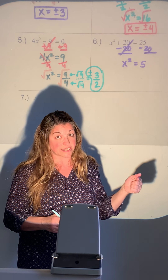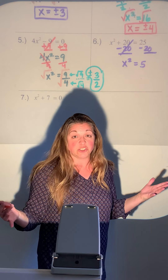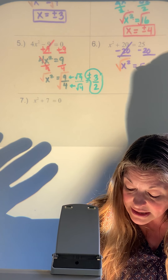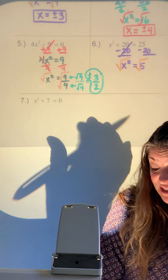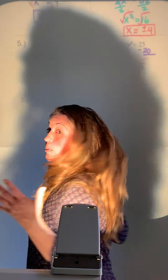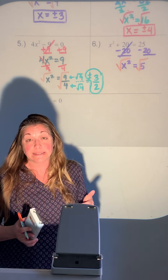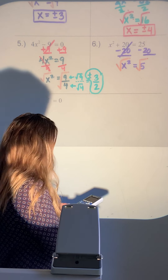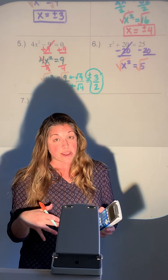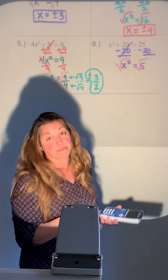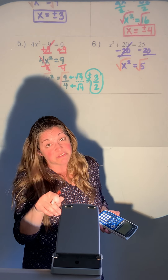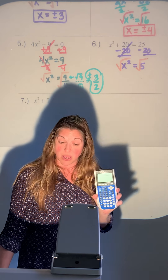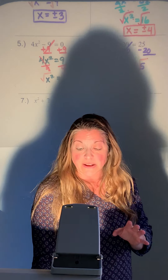The algebra doesn't change — x squared is alone, so go ahead and square root both sides. Now you really do need a calculator. Depending on what you're using, enter the square root symbol and then 5, or type 5 and then square root. When you hit enter, it's super ugly.